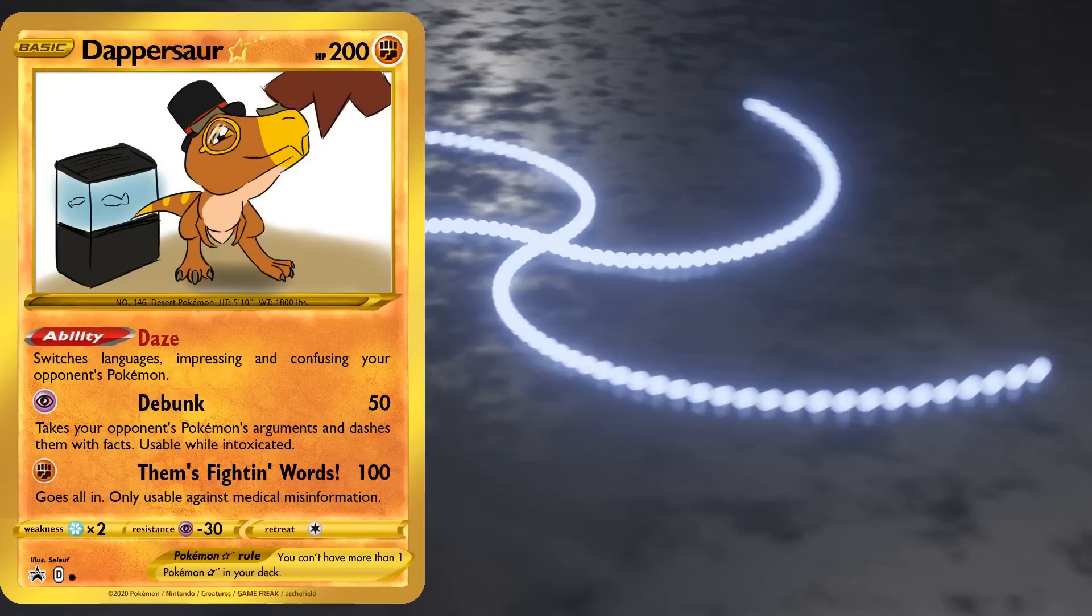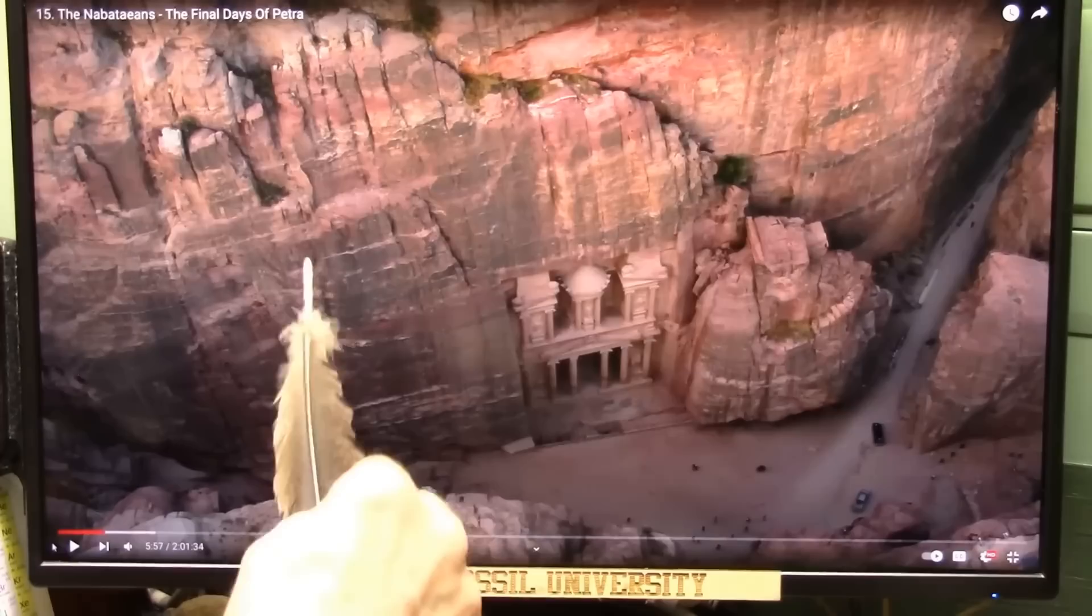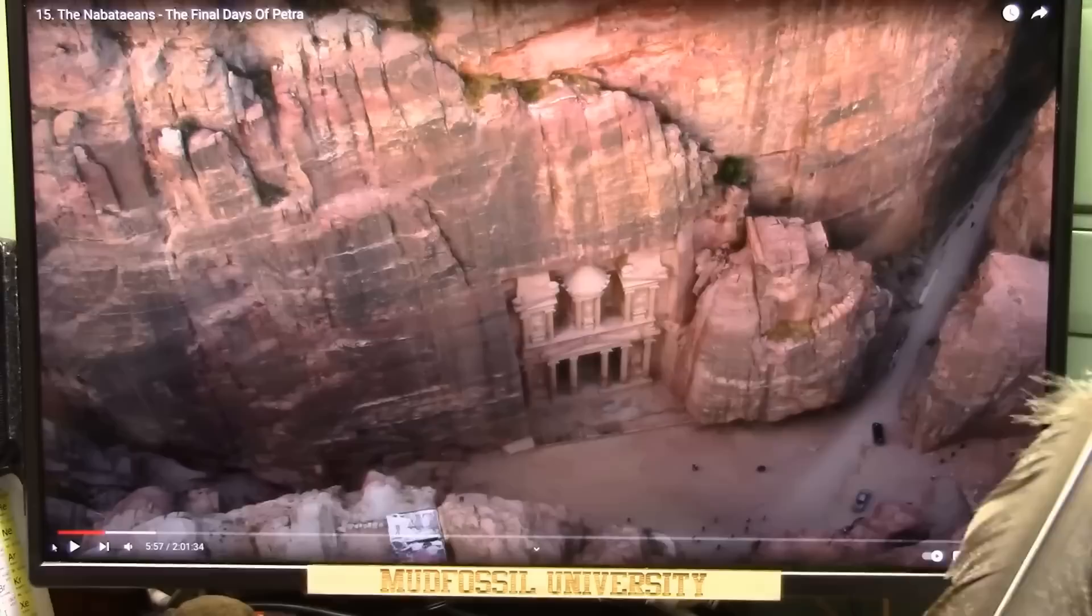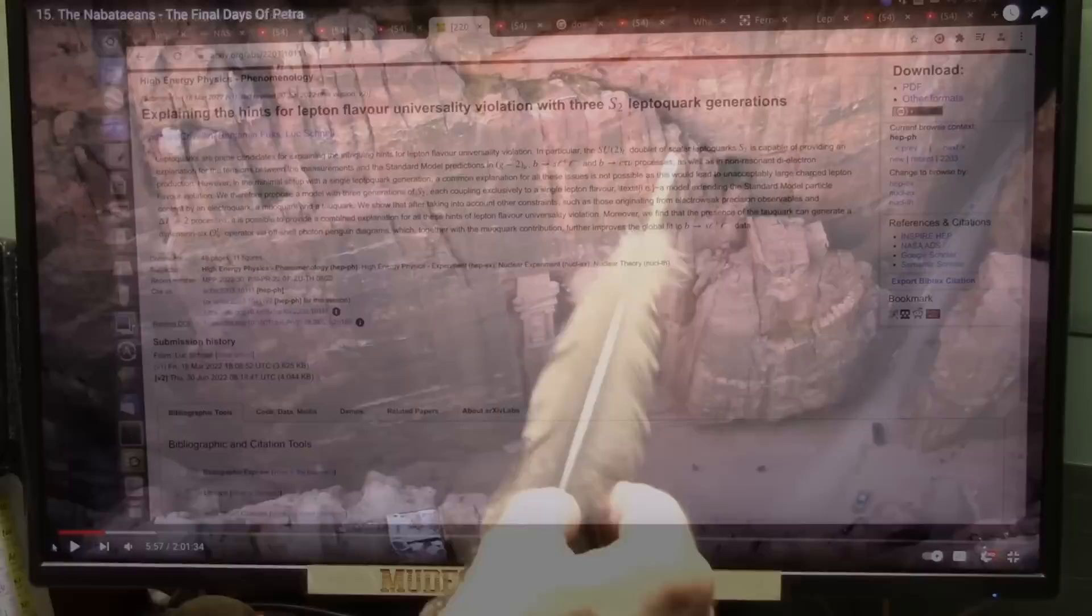But hey, what can I expect from the guy who thinks that Petra was carved into still wet flesh that somehow turned into sandstone? As I have always said, all of this is nothing more than bodily tissue from just some gigantic creature. These are nothing more than muscle fibers, and these are sarcomeres.